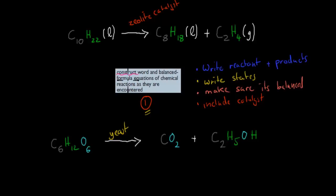I go through the first dot point, which is construct word and balanced equations. And when you construct balanced word equations, you need to make sure that you write your reactants and your products. So in this case we've got our reactants here. These react and they form these two products. You want to make sure you write your states. So liquid, gas in this case. You want to make sure that they're balanced. In this case they're balanced. And you include the catalyst as well if necessary. In this case the zeolite catalyst will increase the rate of reaction from those reactants.